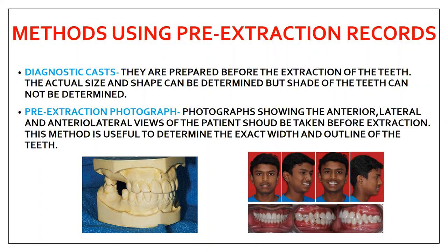The diagnostic cast is prepared before extraction. It allows you to see the actual size and shape of the teeth, and then place the same size in the patient. However, the shade of the teeth cannot be determined from a cast — you can see the size and shape but not the shade.